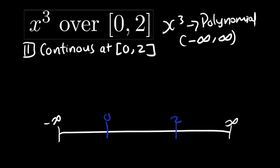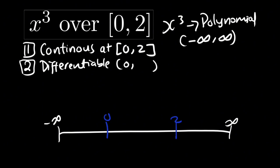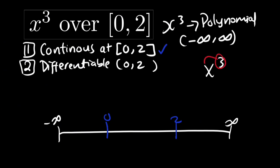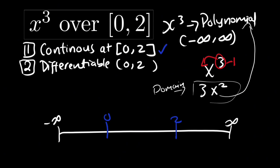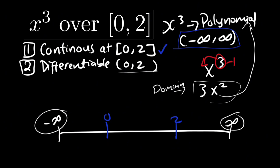Now let us check the second rule: the function has to be differentiable on the open interval (0, 2). We derive x cubed: using the power rule, we bring down the 3 and subtract 1 from the exponent, giving us f'(x) = 3x². The domain of this polynomial derivative is also negative infinity to infinity, and the interval (0, 2) is within that domain, so the second rule is also fulfilled.